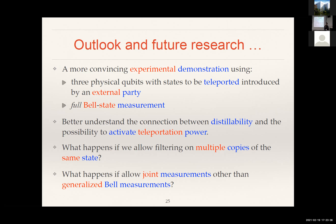Question: Instead of filtering, could you use an ancilla state with post-selection and partial trace to achieve the same thing? Well, filtering is just described by a matrix — a filter is described by a matrix. As to how you implement this filtering, you can do it using ancillae, or by a partial measurement, or whatever. Basically, a local filtering operation just corresponds to a stochastic local operation — it's like a CP map that is not trace-preserving. Sometimes it fails, but you keep all instances where it passed, and those are the good instances.